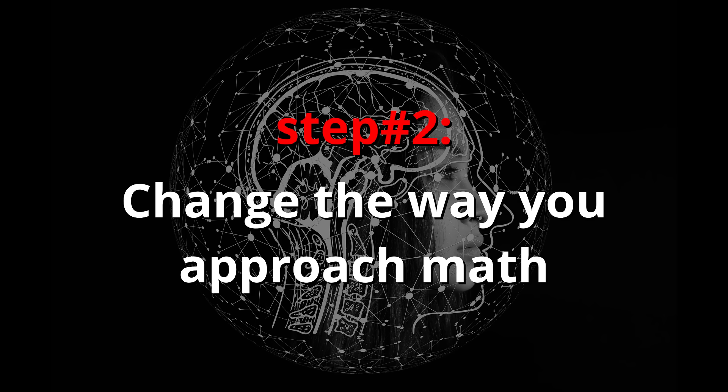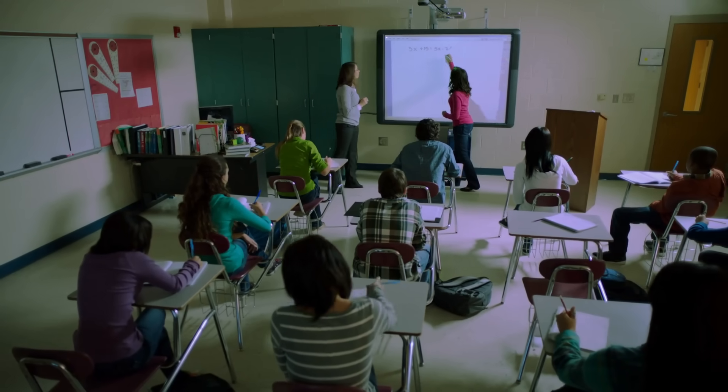Step number two, change the way you approach math. There are basically two ways to approach math. The first one is what I call rule-based approach. It's the classic school approach.